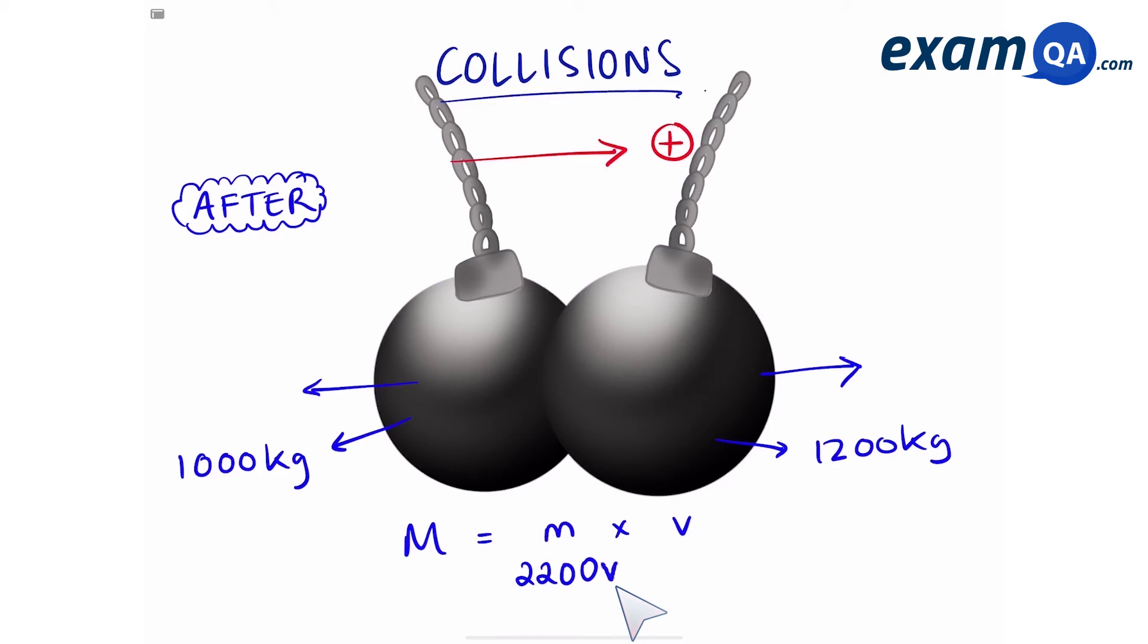So to work out the momentum, we just have to remember our rule about conservation of momentum, which means that the total momentum before is equal to total momentum after. We worked out the total momentum before was minus 20,000. That means that's going to be the same for after the collision because momentum is conserved. So now putting that into our formula gives us minus 20,000 is equal to 2200 times the velocity.